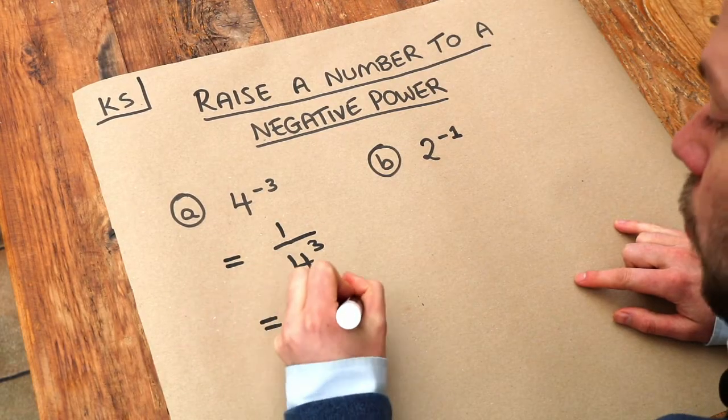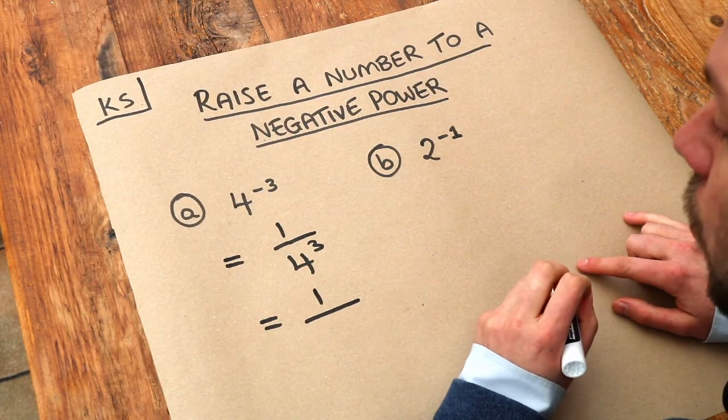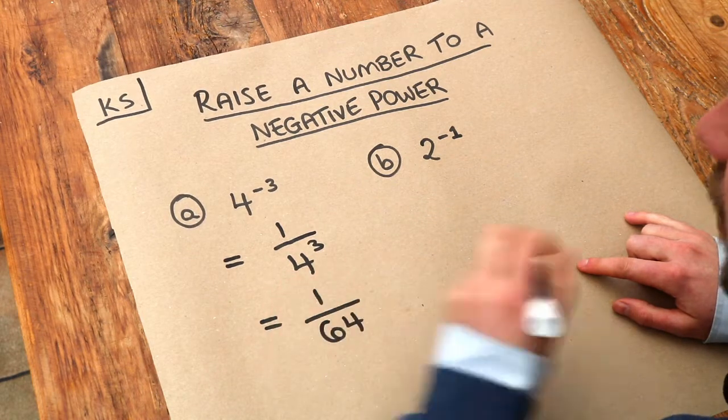And then what is 4 cubed? Well 4 cubed is 4 times 4 times 4, which is 64. So we end up with 1 over 64.